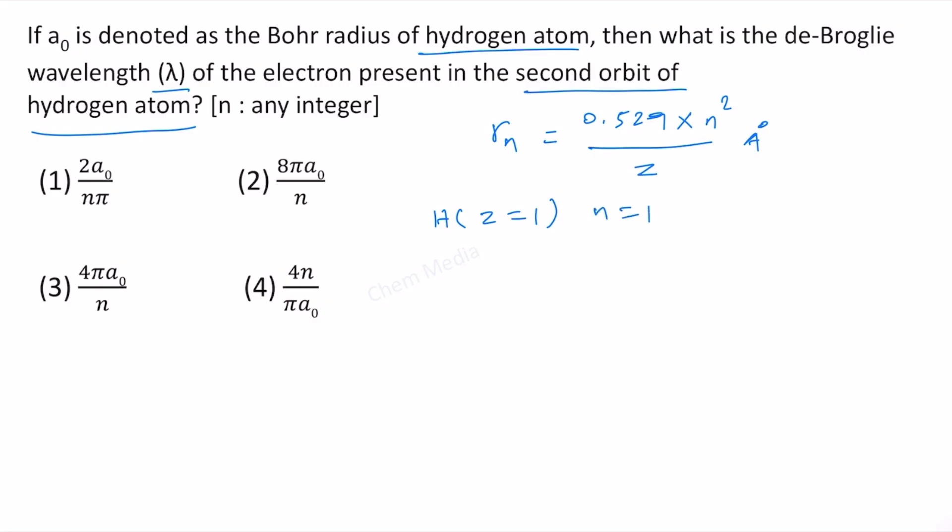Let us say if n is equal to 1, if it is in the first orbit, then the value of r is equal to simply 0.529 angstrom and that is equal to a₀, that is what we call it as Bohr radius.